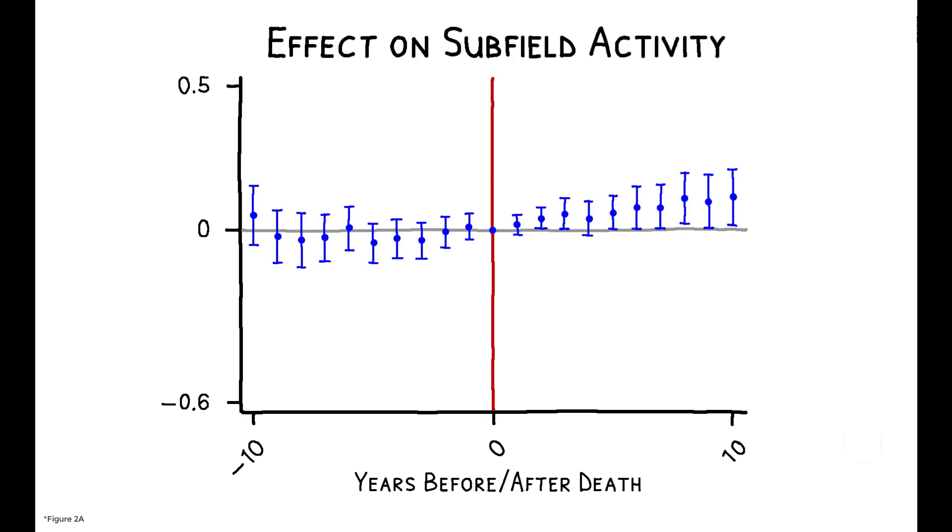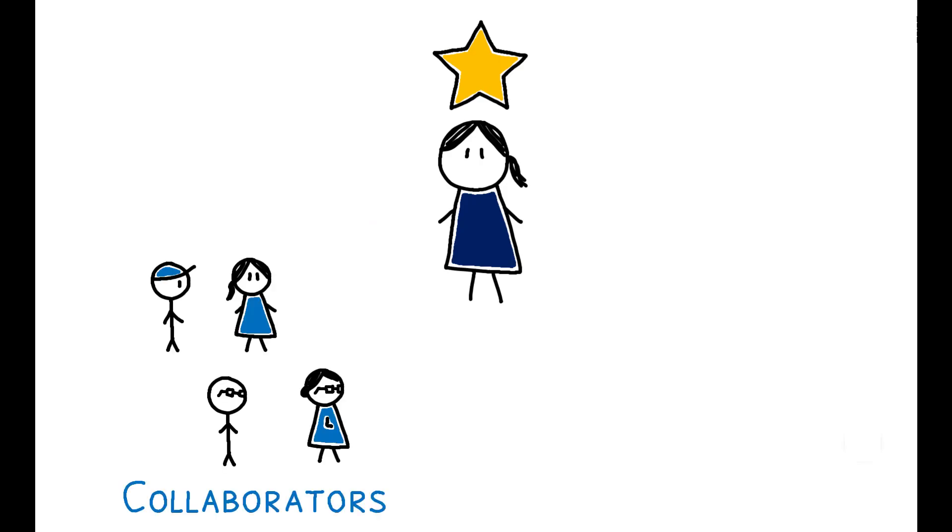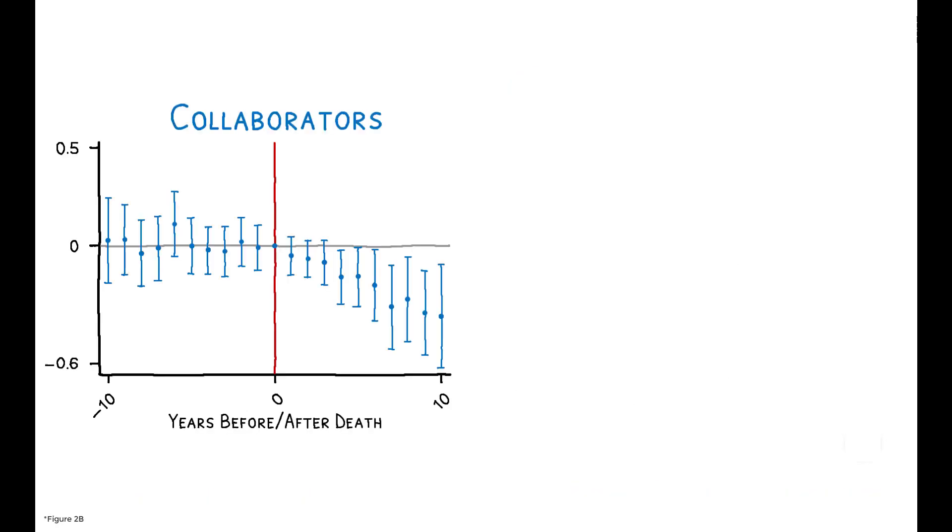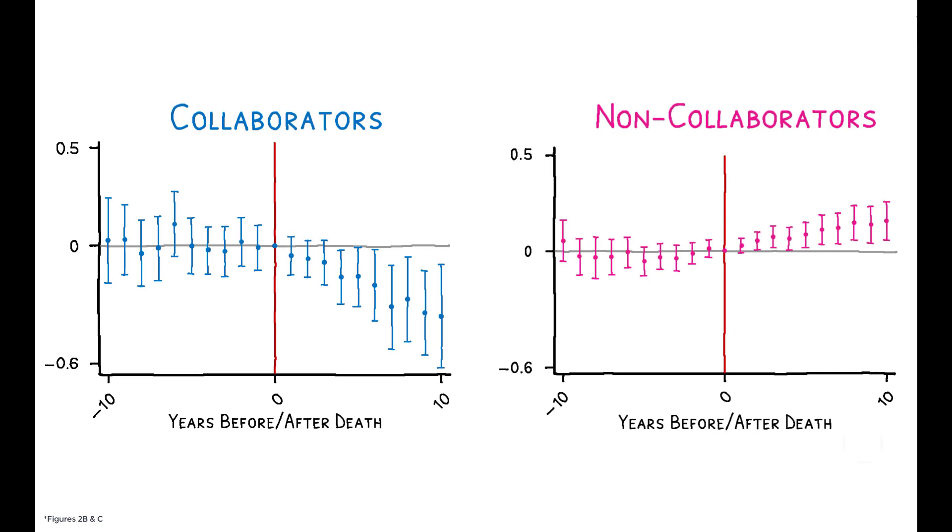Now, this is a fairly modest change, but these aggregate effects hide a striking difference between former collaborators of the deceased star and non-collaborators. Publication activity by collaborators drops by 20.7% after the star's death, and the aggregate uptick in activity is entirely driven by non-collaborators, effects that are highly persistent and still discernible years later.